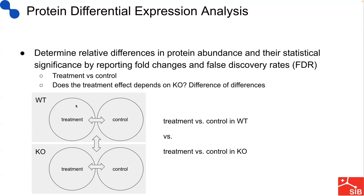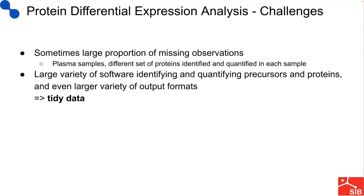Basically, what we can also do is test differences of differences. In the first experiment, we would compare the treatment group to the control group in the wild type cell lines. In the second experiment, we compare the treatment group to the control group in the knockout cell lines. And in the end, we can also compare the differences obtained in the knockout to the differences obtained in the wild type group to answer the question: does the treatment effect depend on the wild type or the knockout cell line?